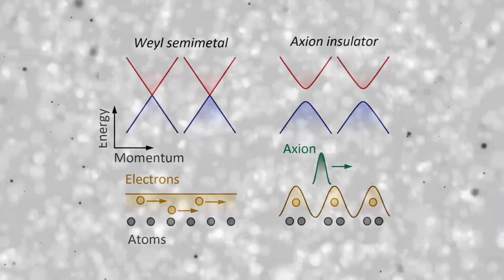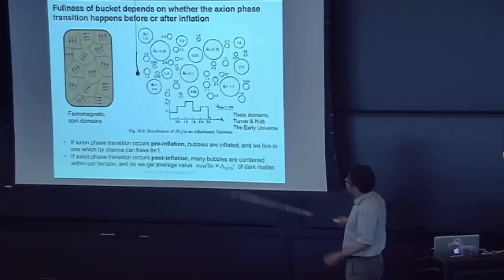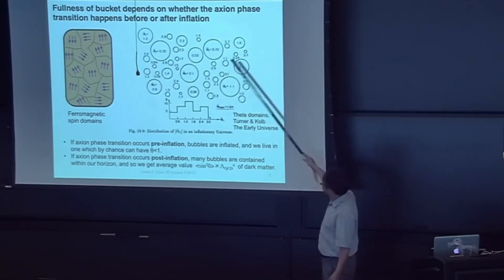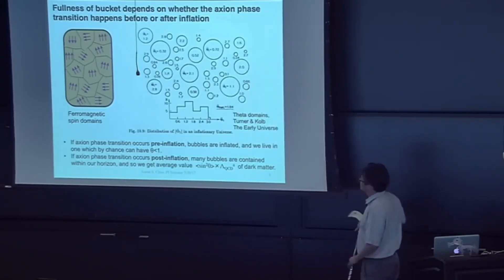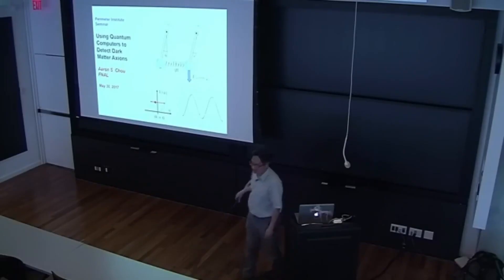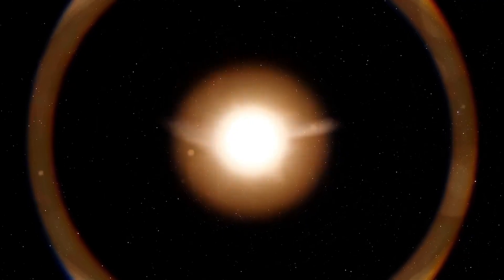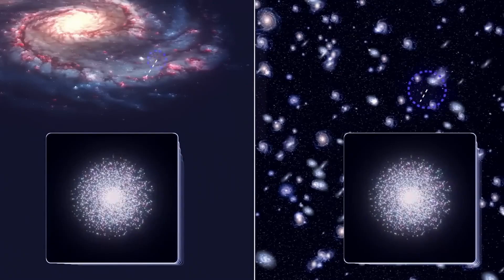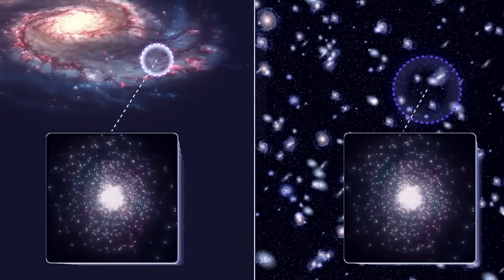Scientists have proposed countless theories to explain its existence, but one of the most compelling candidates is the axion, a hypothetical ultralight particle that could finally unveil the truth about dark matter. Now, in a shocking twist, new data suggests...